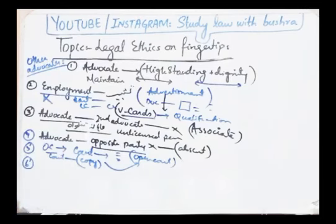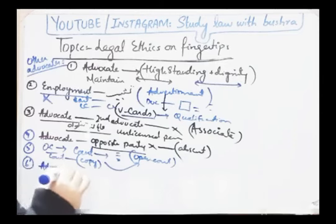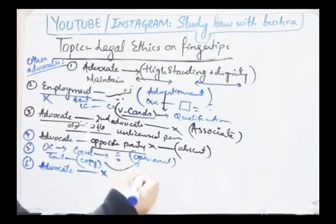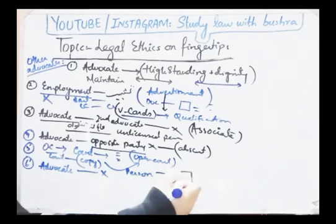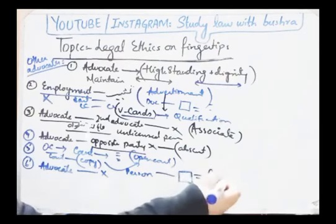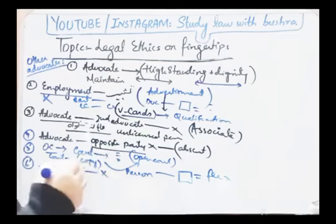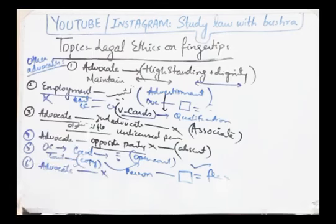Agla rule: 'An advocate should decline association with a colleague unless the dues of the advocate first retained are paid.' Agar koi person aapke paas apna case lekar aaya hai lekin isse pehle usne kisi doosre advocate se bhi case par advice li thi ya usko hire kiya tha, to jab tak us pehle advocate ki fee clear nahi ho jaati, uske paise nahi mil jaate, tab tak aap kisi bhi person ko assist nahi kar sakte, uski employment nahi le sakte.